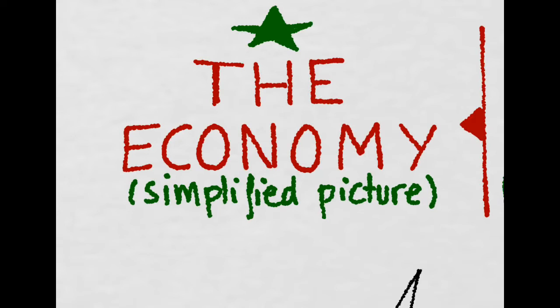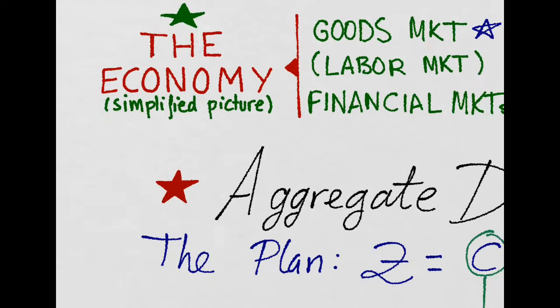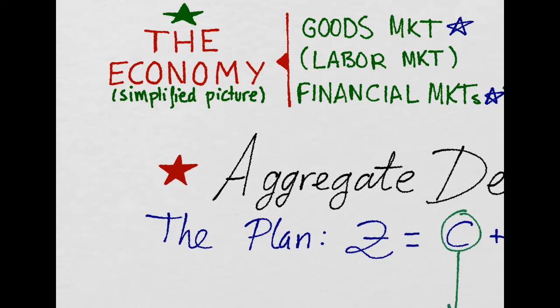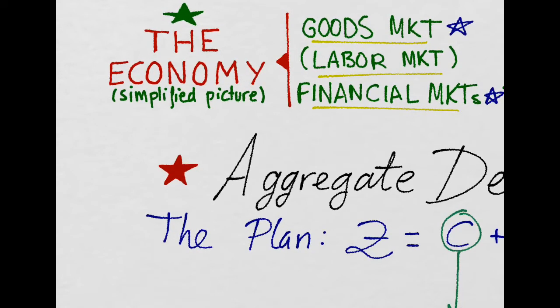In this simplified picture, we find three interrelated markets: the goods market, the labor market, and the financial markets.